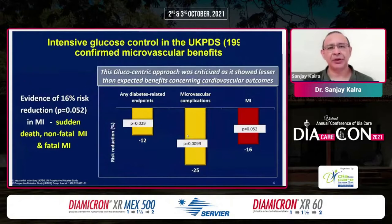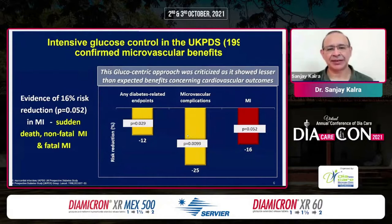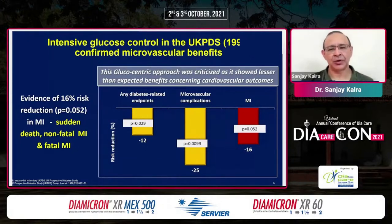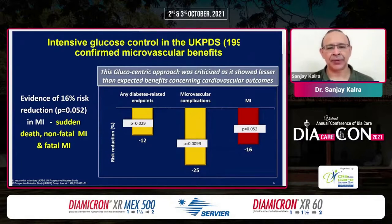Even before the ADVANCE trial, the UKPDS — reported when I was a student — had confirmed statistically significant improvement in microvascular outcomes and numerically significant improvement in macrovascular outcomes. When we looked at both together, there was statistical significance. But by a mere whisker, just 0.002 of p-value, the improvement in sudden death, non-fatal MI and fatal MI could not reach statistical significance. Do remember, however, that the people who worked in UKPDS did not have access to the modern drugs that we have, and they could not monitor their patients as well as we are able to.